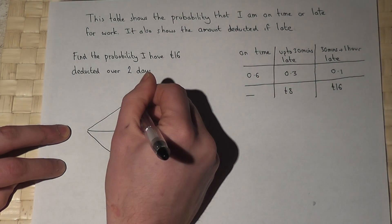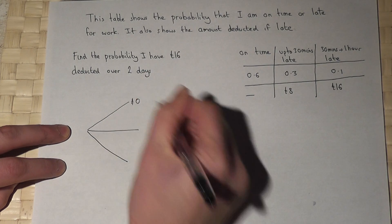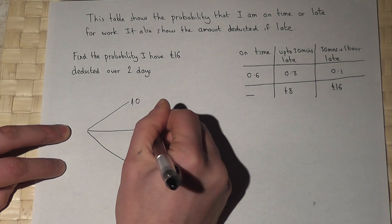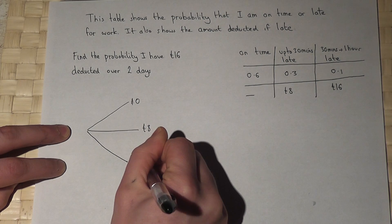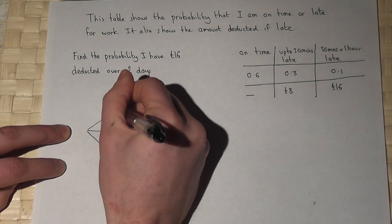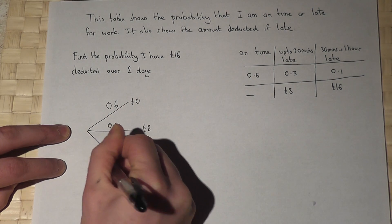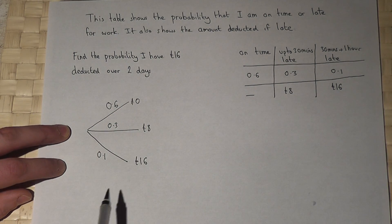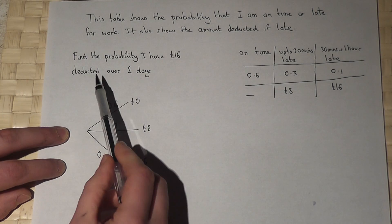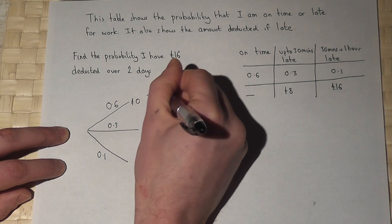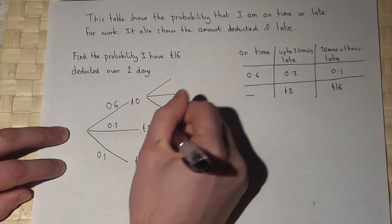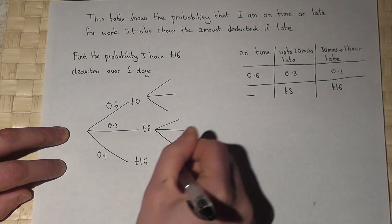I either have no pounds deducted, £8 deducted, or £16 deducted with a chance of 0.6, 0.3, and 0.1. That's day one, but the question asks over two days.